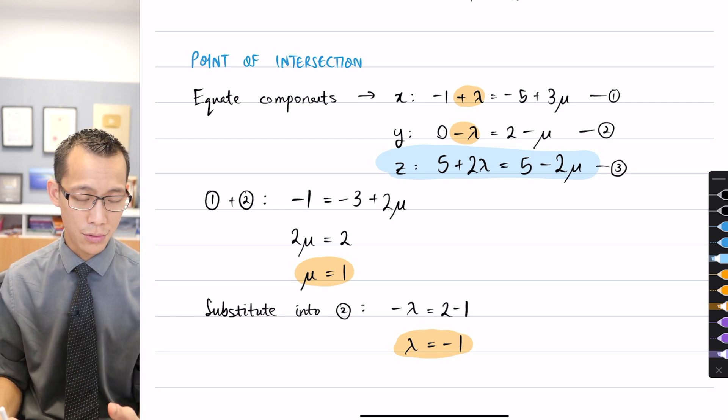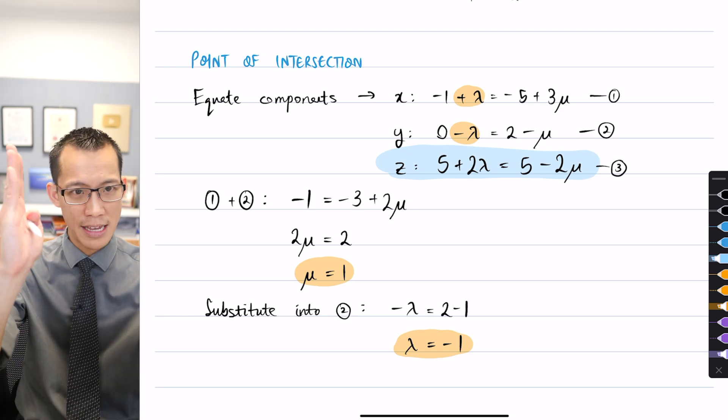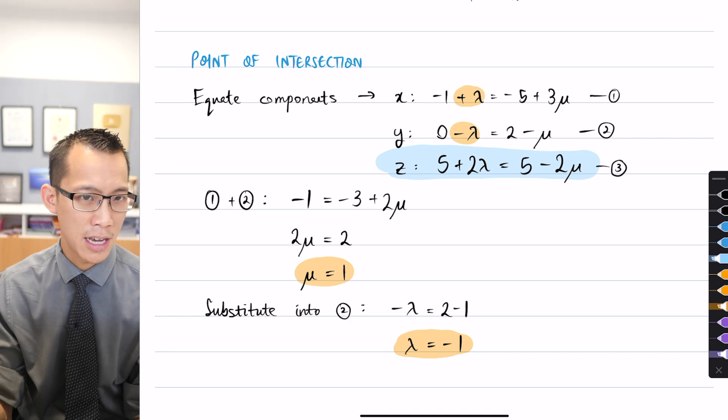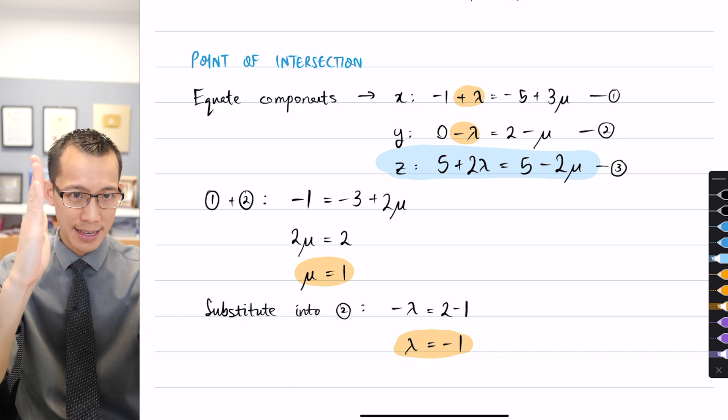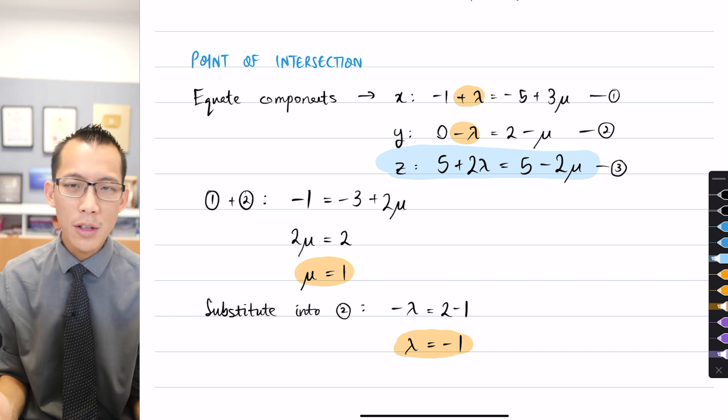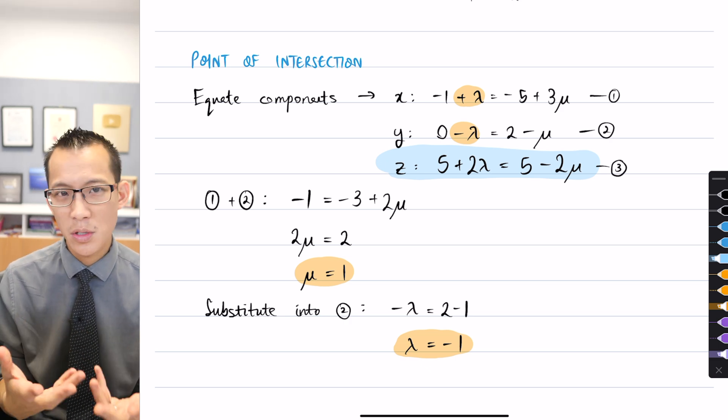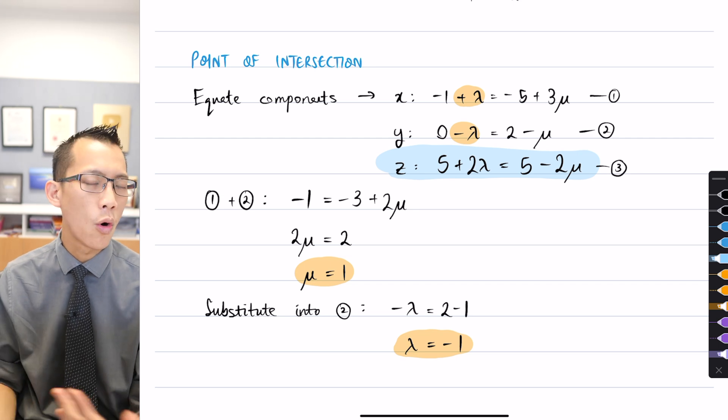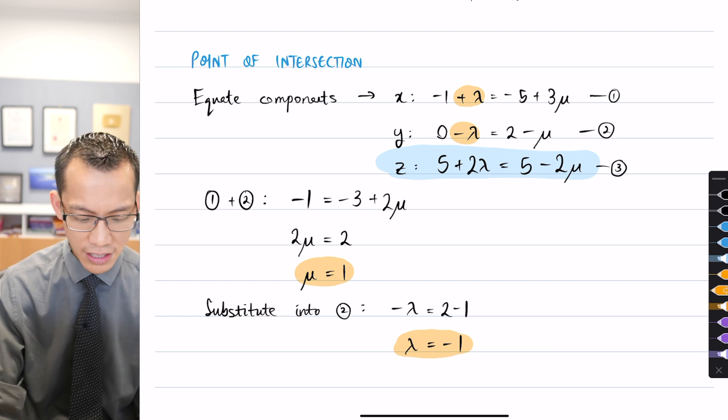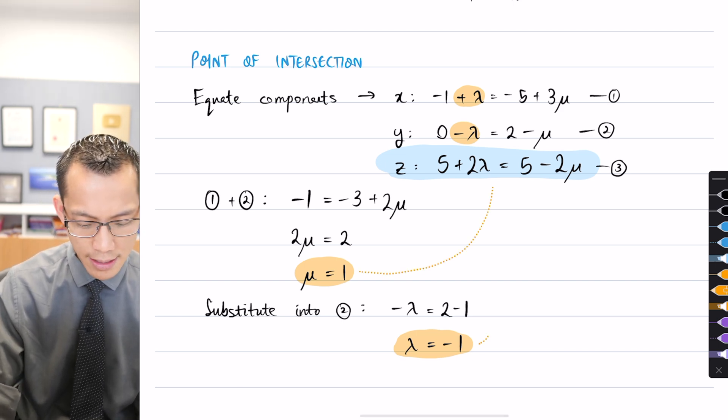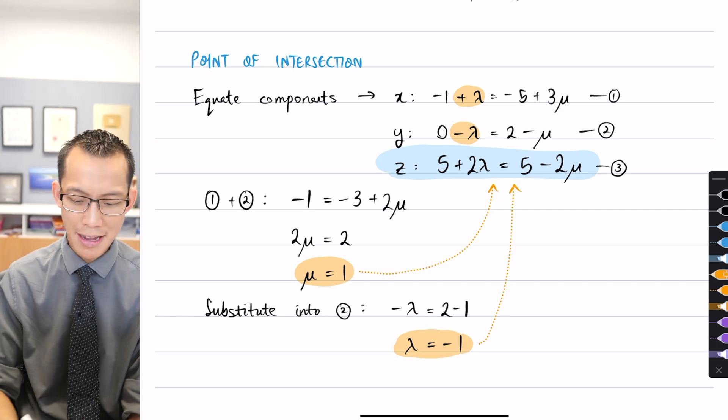Now when you've got two variables and two equations, provided that the two equations don't represent parallel lines, you'll always find a point of intersection. That's kind of what we were saying before. Do you remember that? In two dimensions things will always meet unless they're parallel. So in other words, I'll always find a mu and I'll always find a lambda. However, that doesn't mean it actually works with the third equation because two equations will always give you a solution for two variables. What I really need to do is I actually need to take this mu and this lambda and substitute them into the third equation.